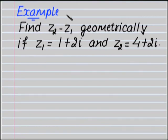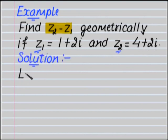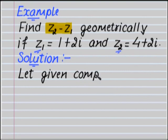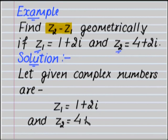Now let's see an example. Find z2 minus z1 geometrically if z1 is equal to 1 plus 2i and z2 is equal to 4 plus 2i. Solution: the given complex numbers are z1 equal to 1 plus 2i and z2 equal to 4 plus 2i.